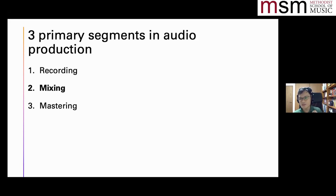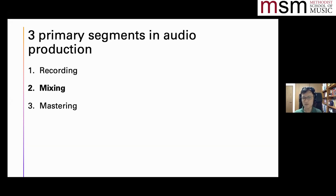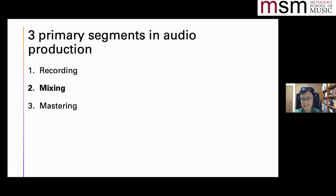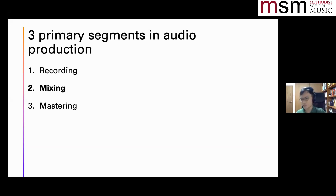There are three primary segments in audio production. You have the recording phase, where you use a mic or audio interface and your computer to process the recording. The second phase is the mixing phase — different instruments are recorded as separate individual tracks, and you put these tracks together. Lastly, there's mastering, which we don't have to be too concerned about right now. I will touch briefly on it at the end when we talk about exporting our song out from GarageBand.